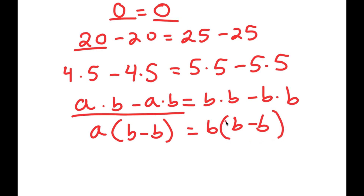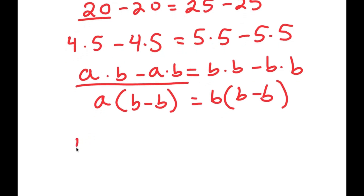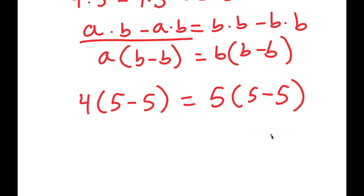In the case of our specific numbers, from my left-hand side I'm going to factor out 4, so I get 4 times (5 minus 5), which is equal to — from my right-hand side, I factor out 5 — so I get 5 times (5 minus 5). So now I have 4 times (5 minus 5) is equal to 5 times (5 minus 5).